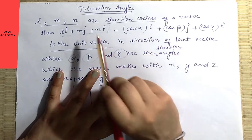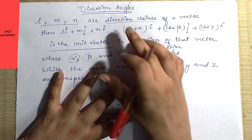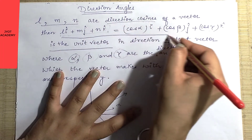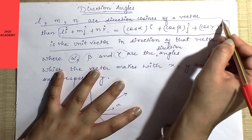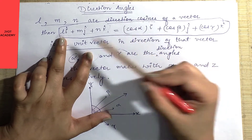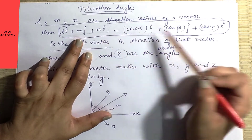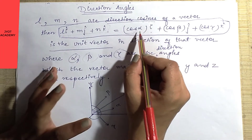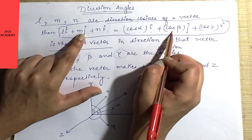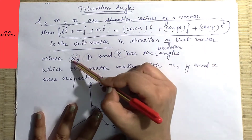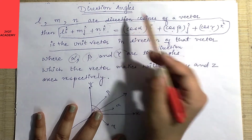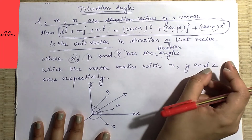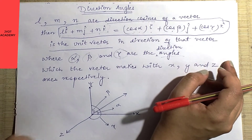Along with direction cosines, there are also direction angles. This is a very important formula — note it carefully. l can be written as cos α, m as cos β, and n as cos γ, where α, β, γ are the direction angles that the vector makes with the x, y, and z axes respectively.